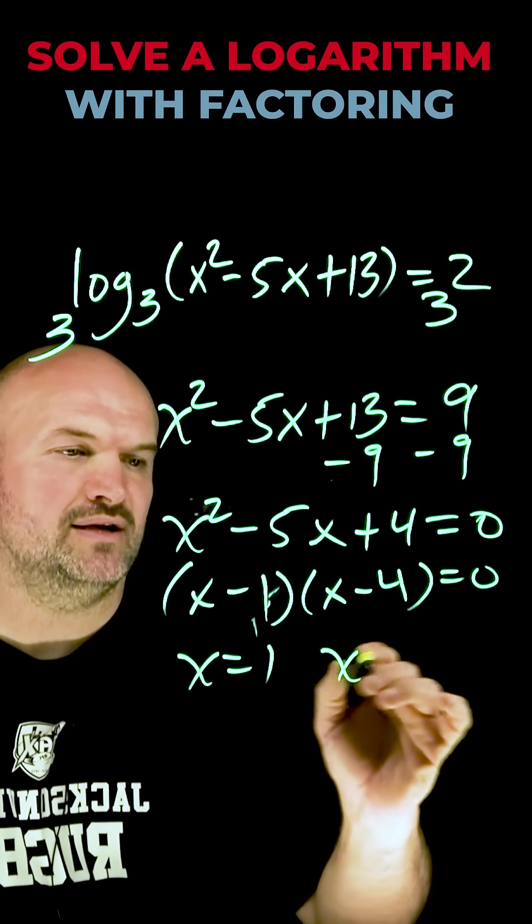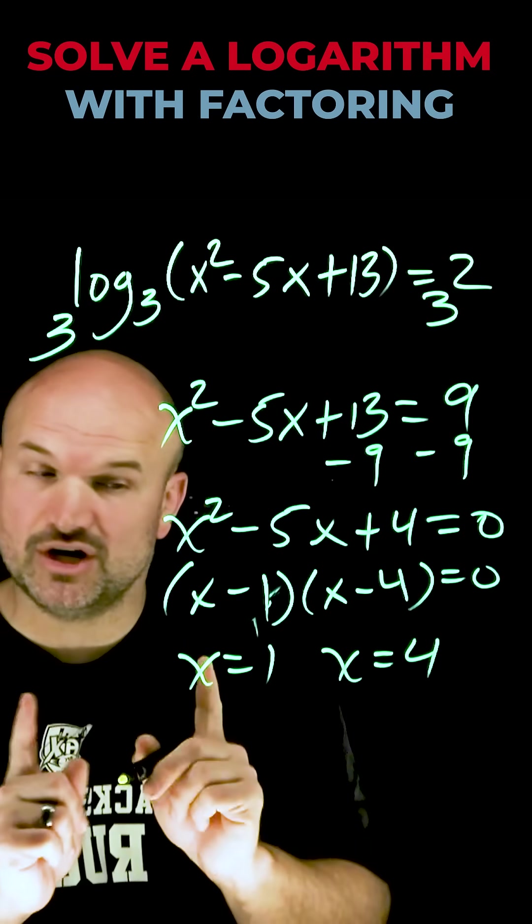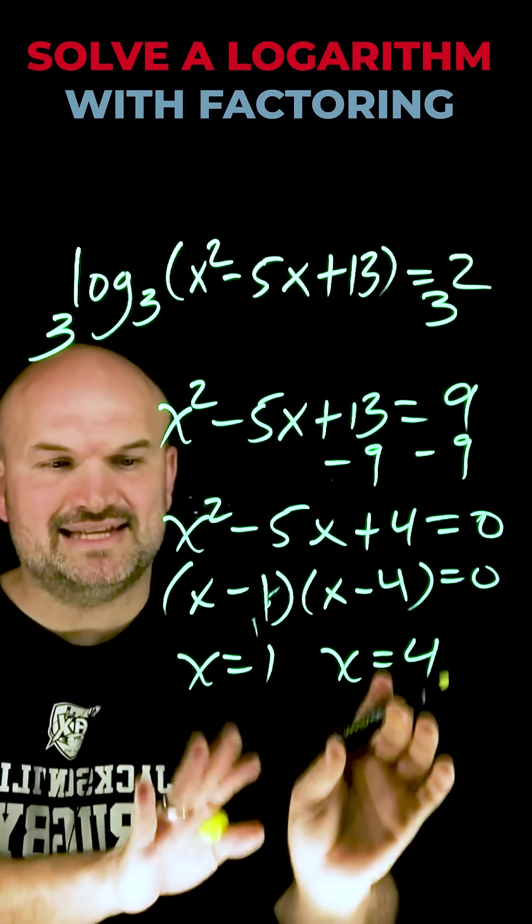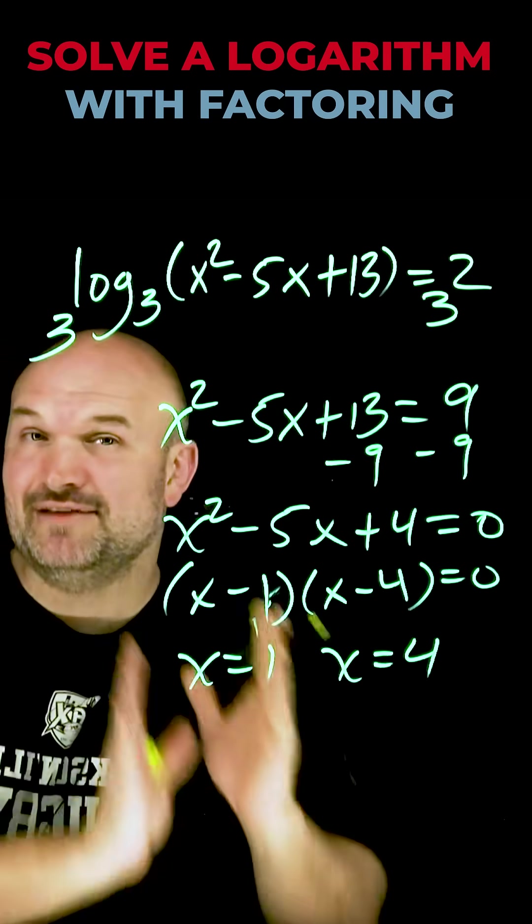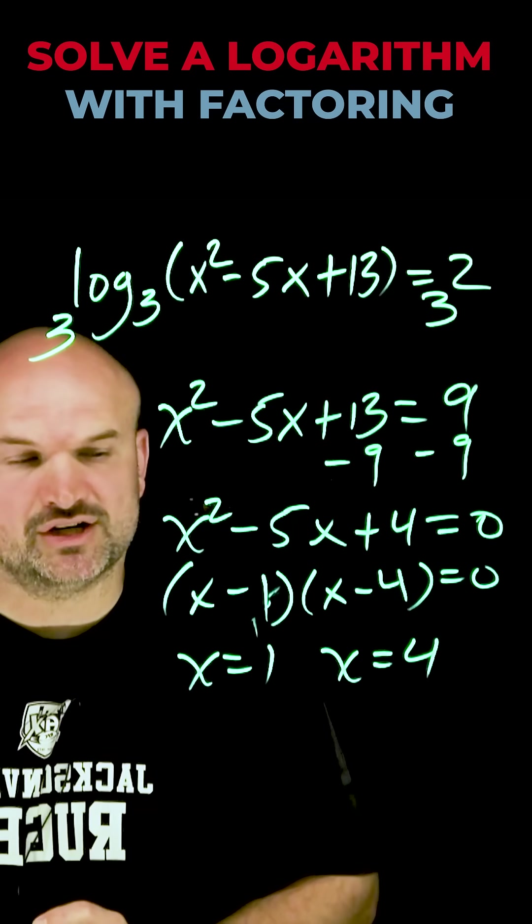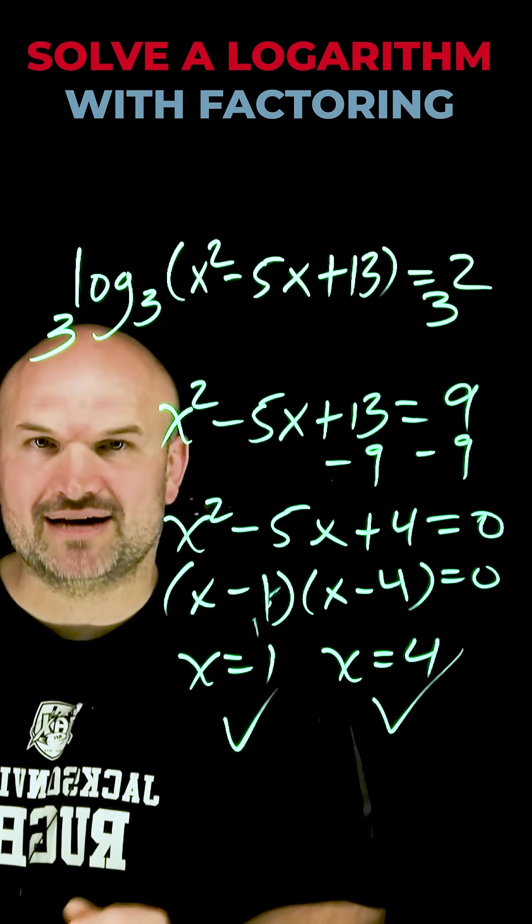I'm going to get my solutions x equals 1 and x equals 4. But make sure, especially when you have a quadratic, to take these values, plug them in there, and make sure you still have positive values. If you get a negative number, then that is what we call an extraneous solution. Fortunately for us, though, these both check out.